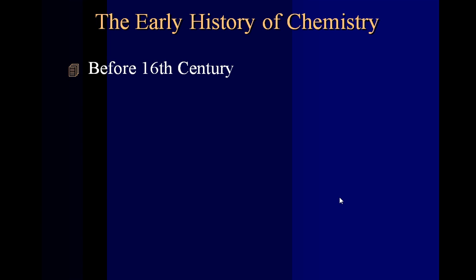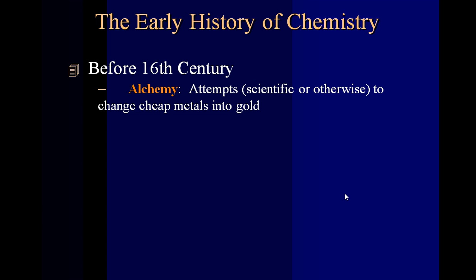Early history of chemistry. Before the 16th century, the type of chemistry that was practiced was mainly alchemy. That was attempts to change cheap metals into gold. And we are capable, we do have the technology today to do that. However, the product costs so much more to make than it's worth. It's like ten times more expensive to make it than it's worth, so we don't do it.